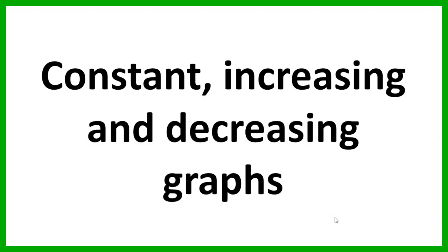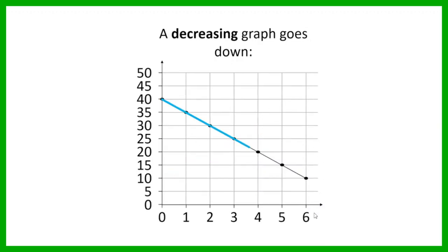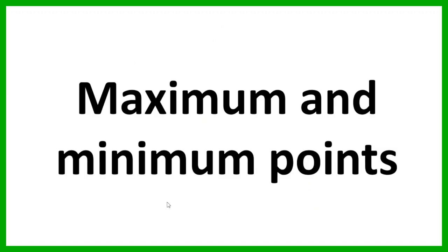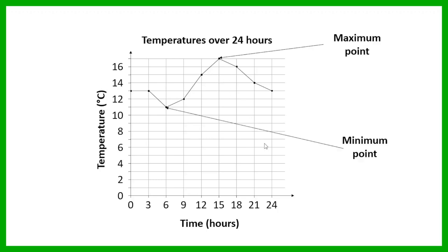So that's our constant graph, our increasing graph, and our decreasing graph. Then we've got maximum and minimum points. If you're looking at a graph, the maximum point is going to be the highest point on the graph — it's the point where the dependent variable has the greatest value. Our minimum point is the point where the dependent variable has the smallest value — it's going to be the lowest point on the graph.